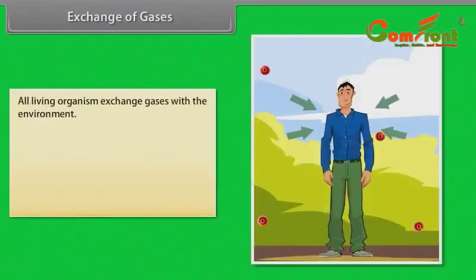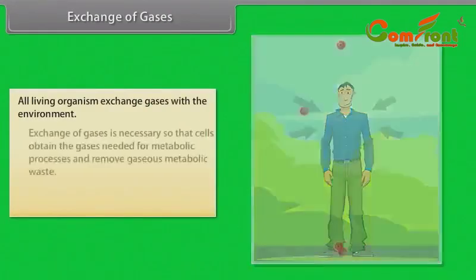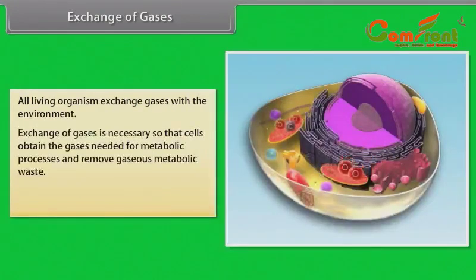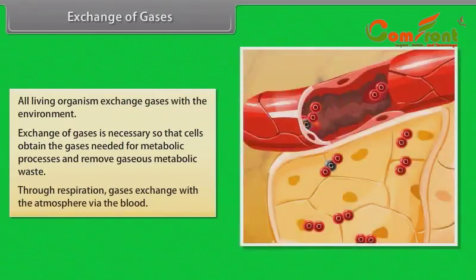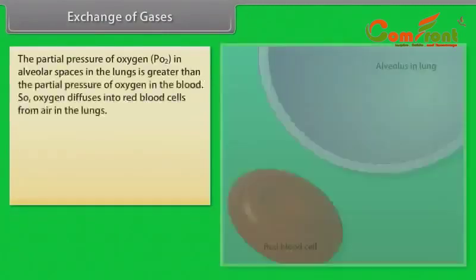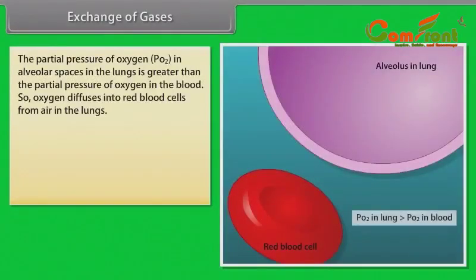Exchange of gases: All living organisms exchange gases with the environment. Exchange of gases is necessary so that cells obtain the gases needed for metabolic processes and remove gaseous metabolic waste through respiration. Gases exchange with the atmosphere via the blood. The partial pressure of oxygen in the alveolar spaces in the lungs is greater than the partial pressure of oxygen in the blood, so oxygen diffuses into red blood cells from air in the lungs.